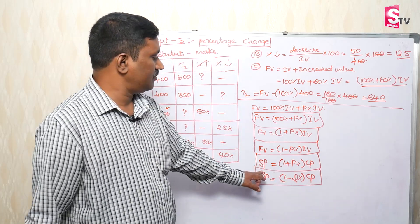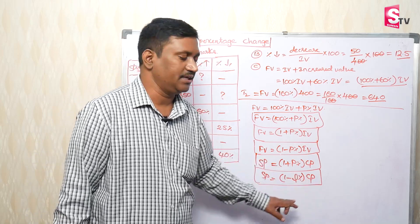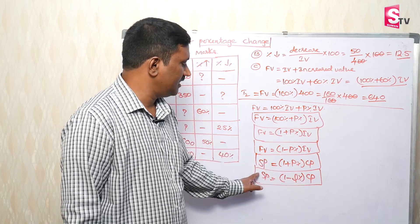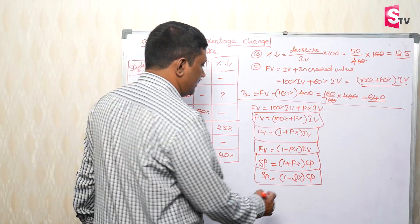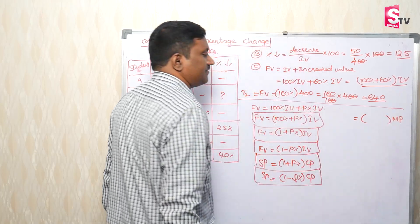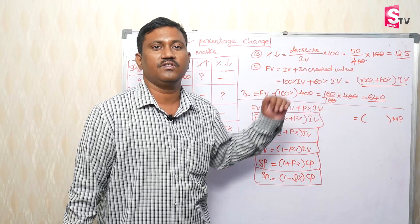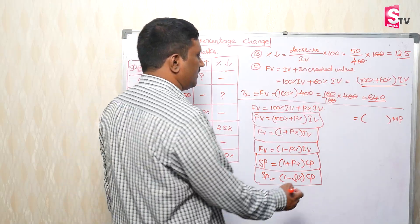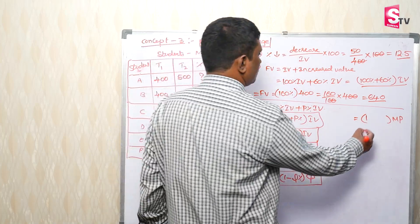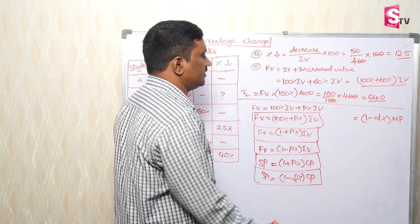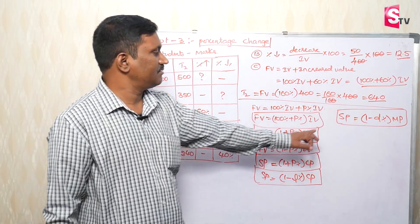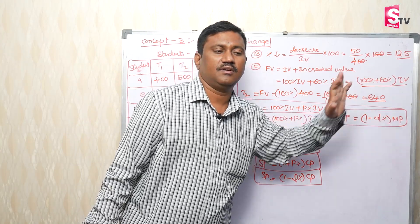For loss: selling price equals (1 minus loss percentage) into cost price, where 1 represents 100%. The selling price also equals (1 minus discount percentage) into market price. These are the selling price and market price relationships.